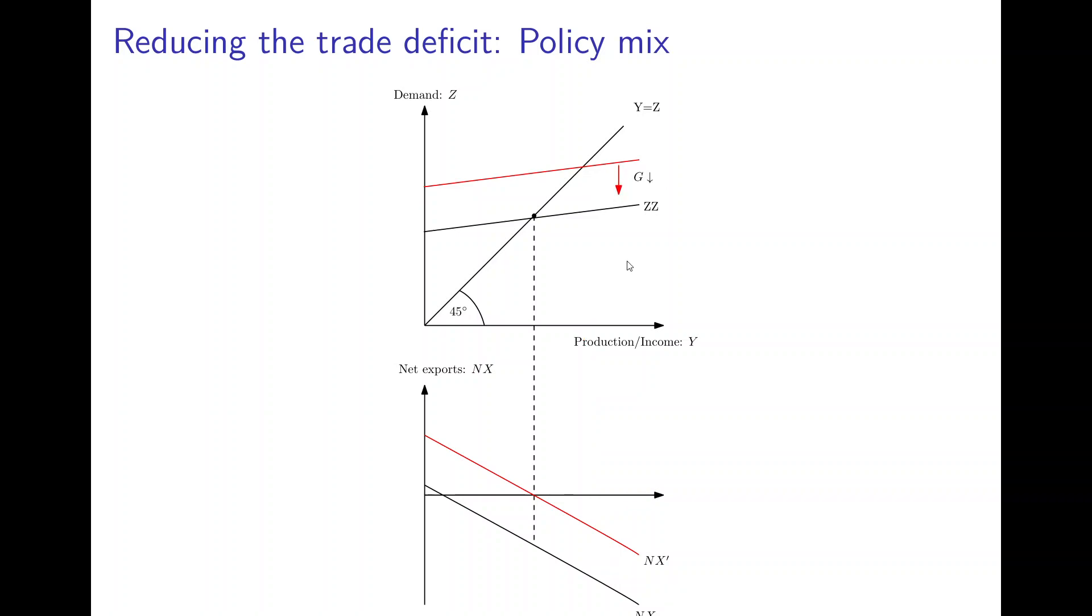What the government can do to sterilize this effect is to reduce governmental spending on consumption to an extent that the ZZ curve shifts back to the old ZZ line. In this situation, the equilibrium at the goods market is again the initial equilibrium, but now with a trade balance of zero, so there is no trade deficit anymore.